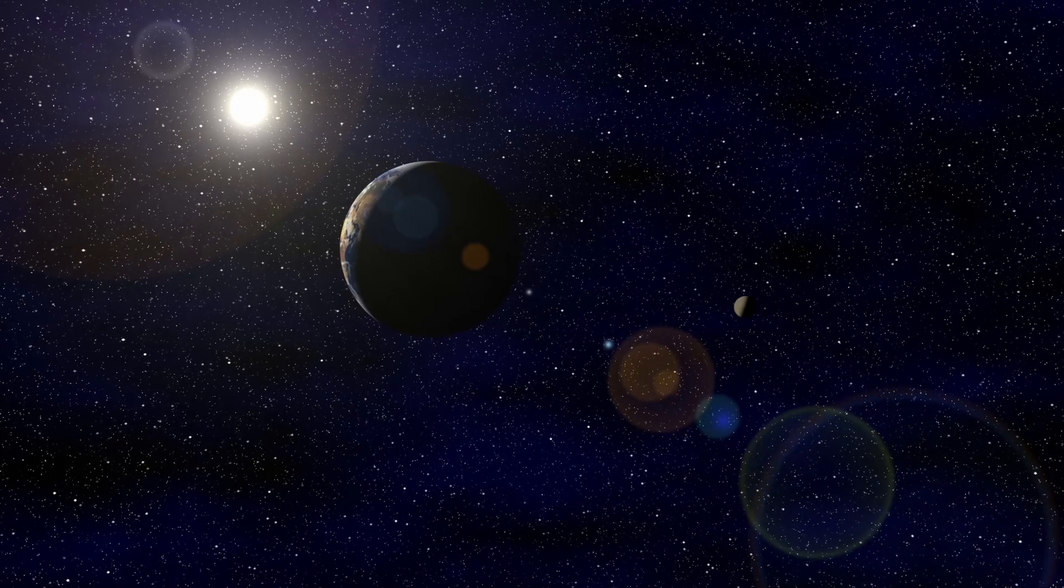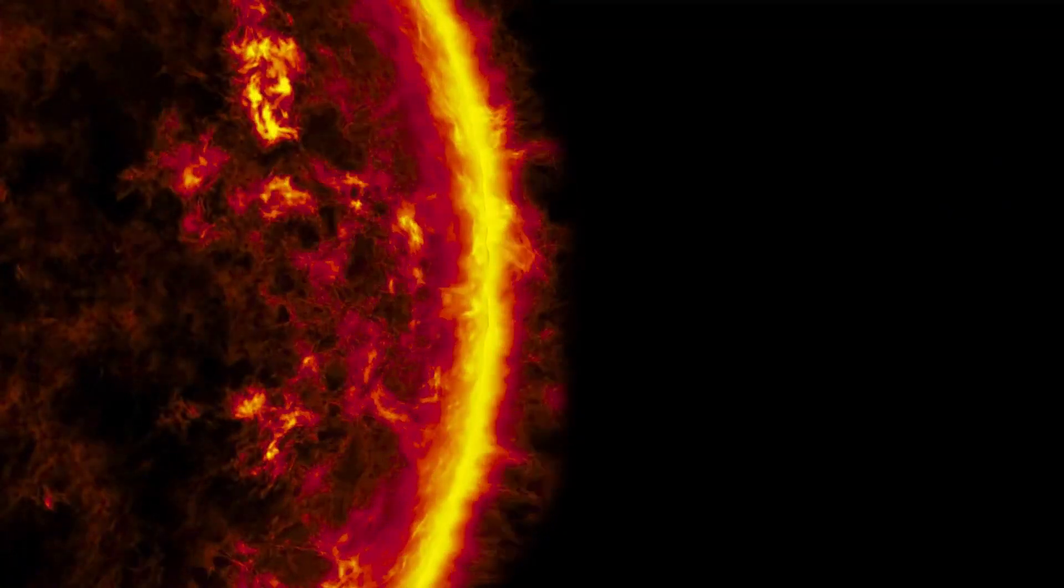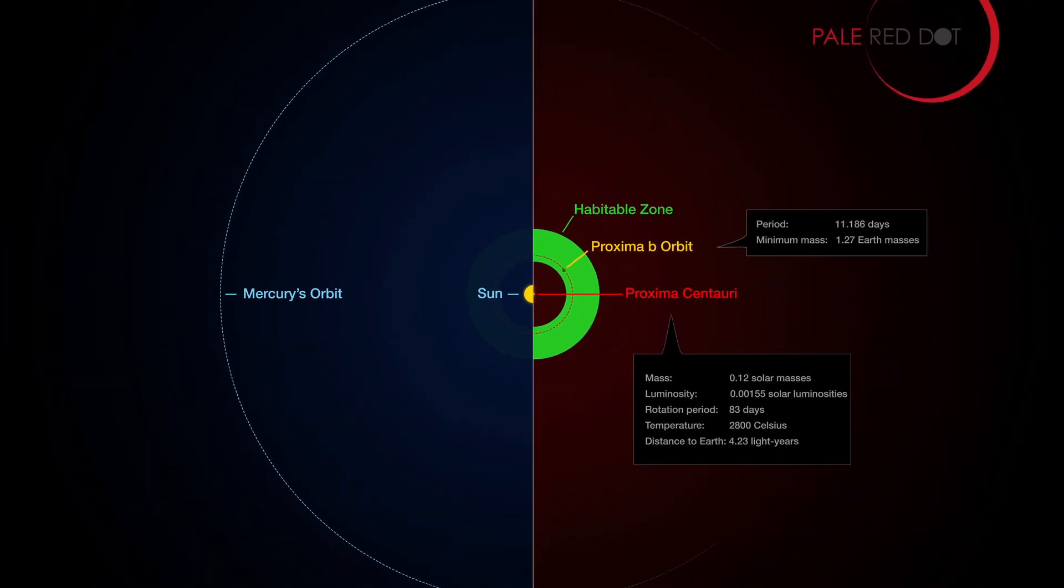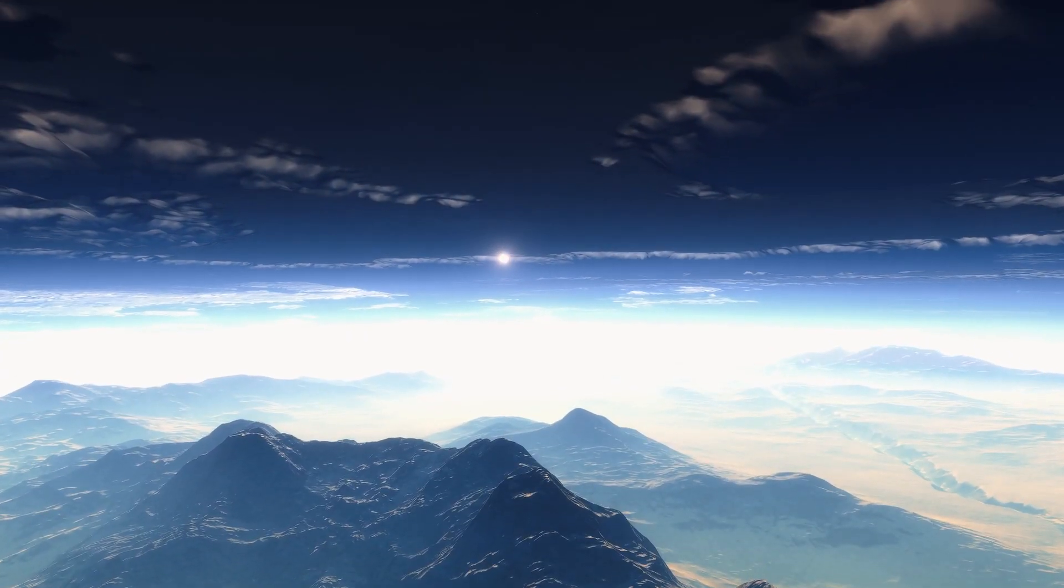Interestingly, Proxima b receives a similar amount of solar energy from its star as Earth receives from the Sun. While Proxima b orbits within the habitable zone, it's uncertain whether it possesses an atmosphere.